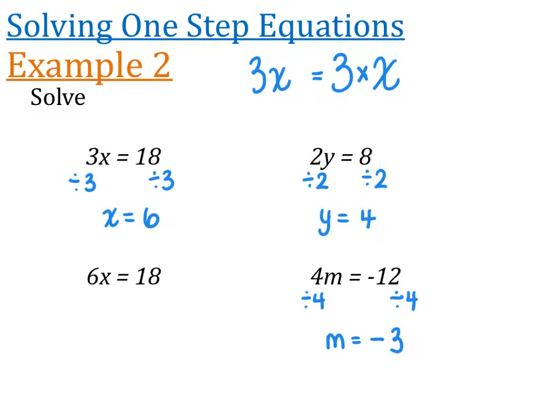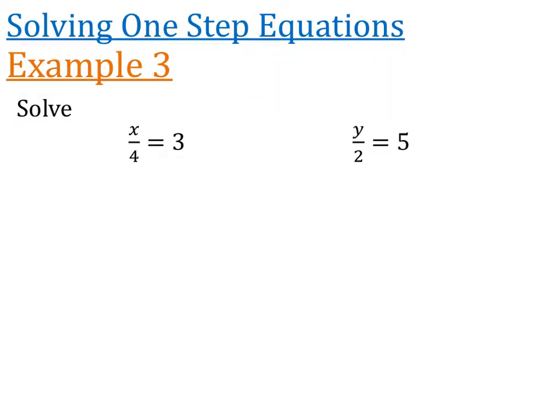We've got a third example to look at as well. So we've looked at adding and subtracting. We've looked at equations that have multiplication in them. What do you think the next one's going to be? Did you say division? Because if you did, you're absolutely correct. So these questions say solve, like all the other questions. Let's read the first one out. It says x over 4 is equal to 3. Well, x over 4 like that is just a really nice way of writing x divided by 4.